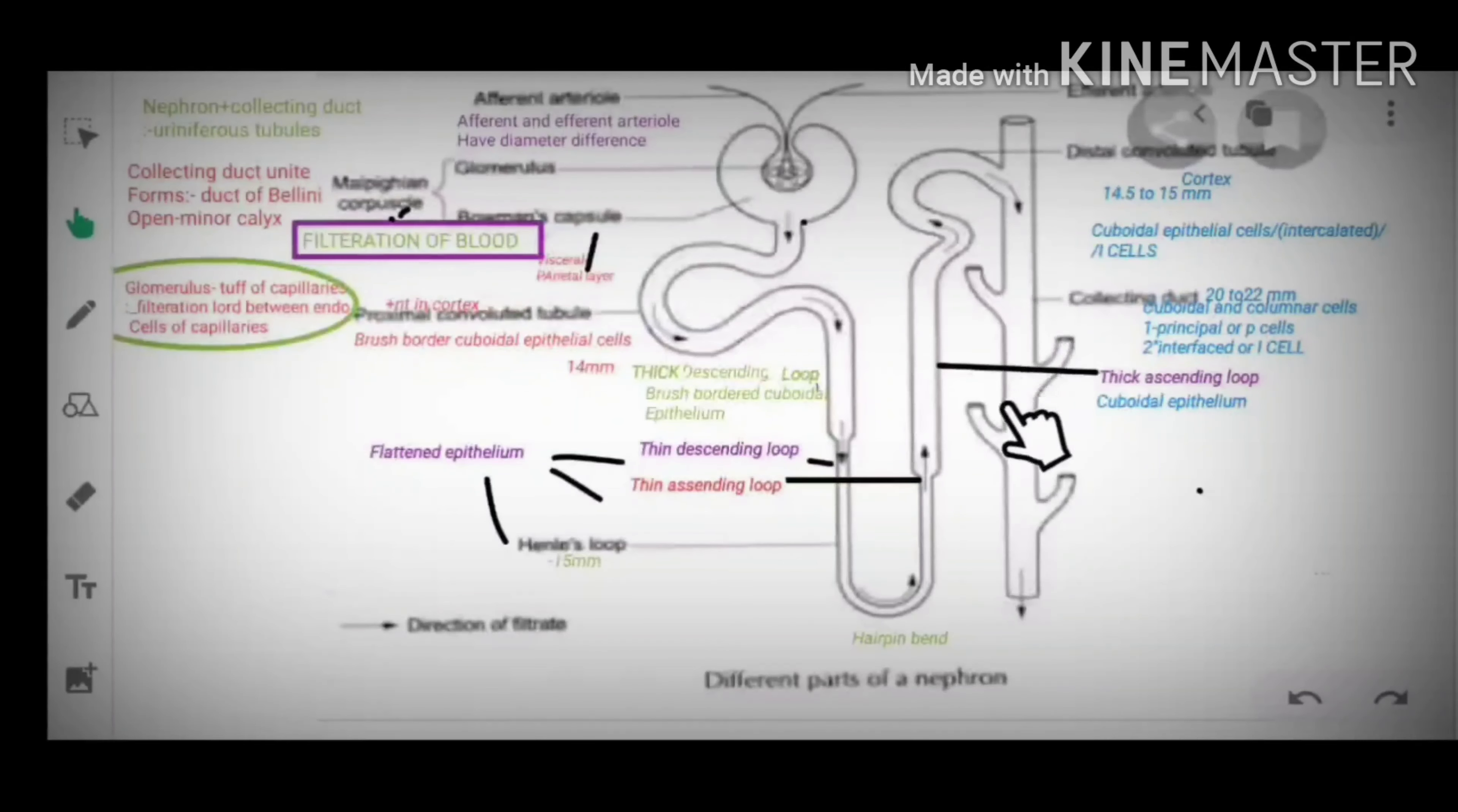Whereas collecting duct which receives the filtrated urine, it is 20 to 22 mm, made up of cuboidal or columnar cells. It has two types of cells: one, principal cells or P cells, and then intercalated cells or I cells.